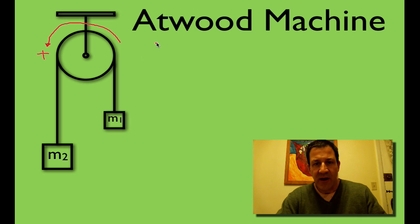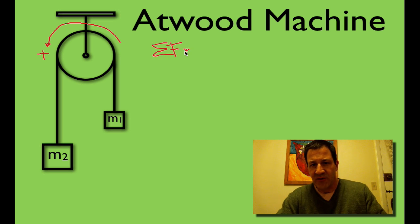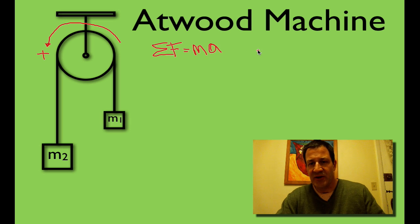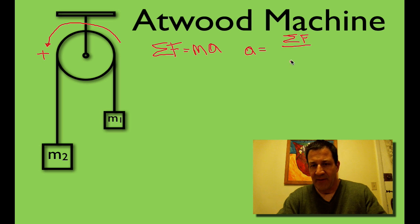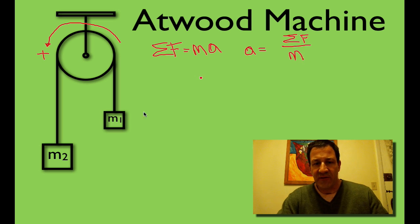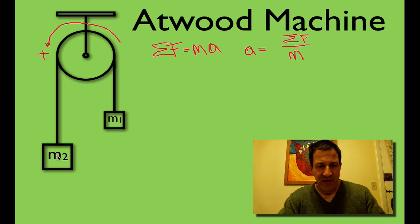Newton's second law says that the sum of the forces acting on the system is going to be equal to the mass times the acceleration. The goal is to calculate the acceleration, which equals the sum of the forces divided by the mass of the system. Before we sum the forces, let's draw them so we have them all and can keep track of everything.